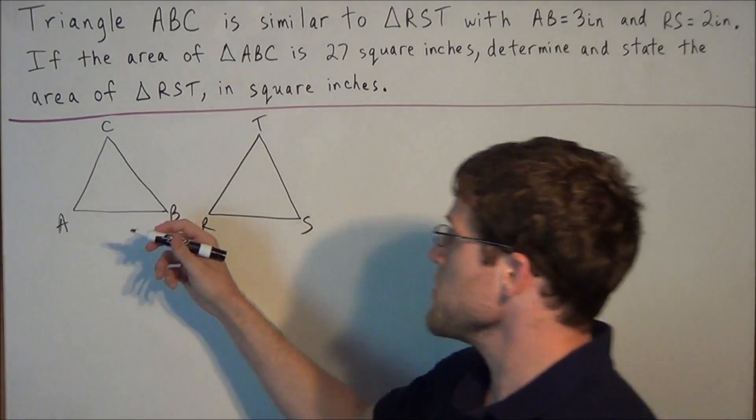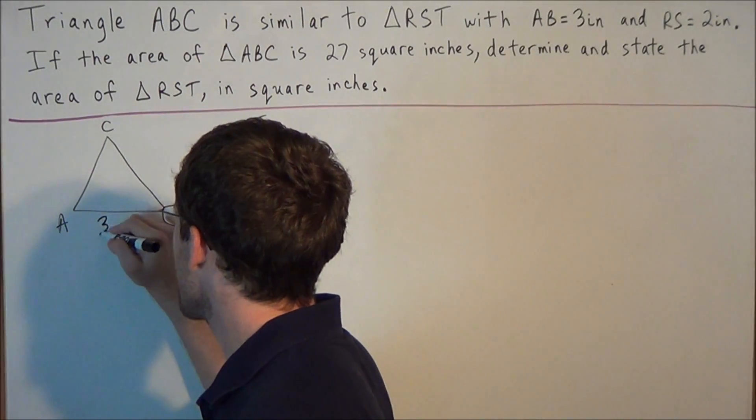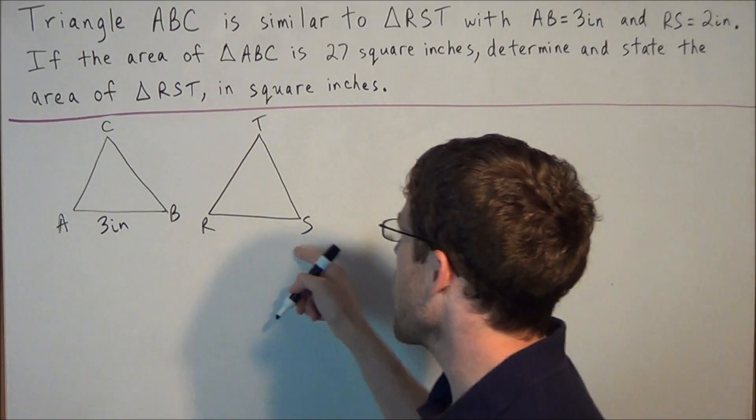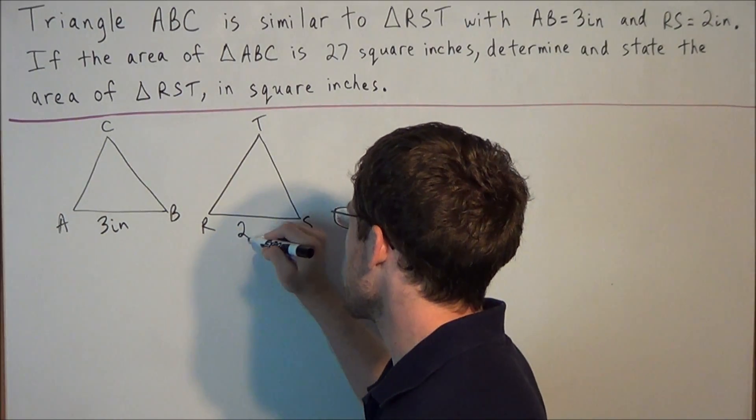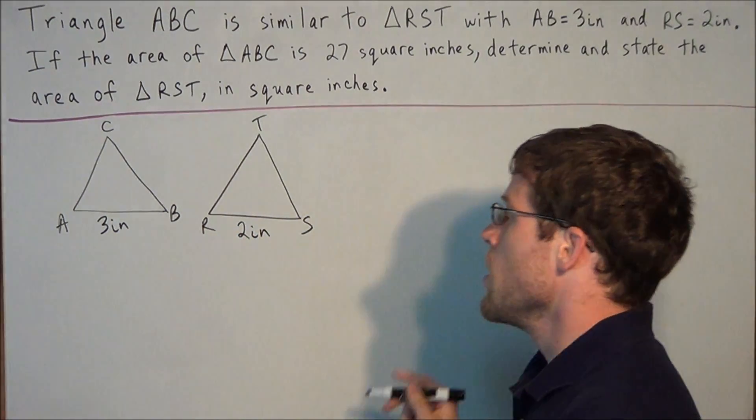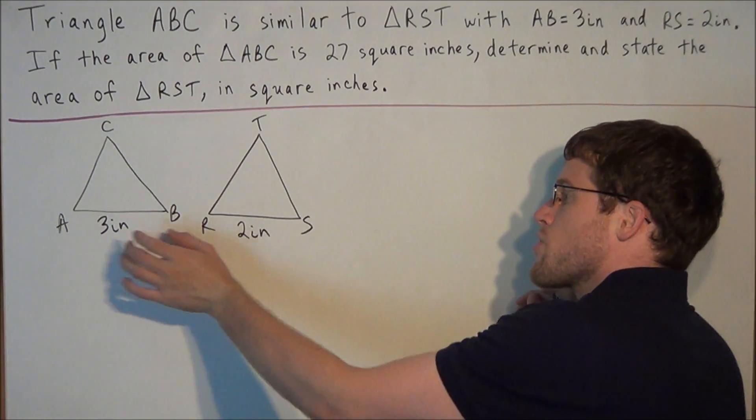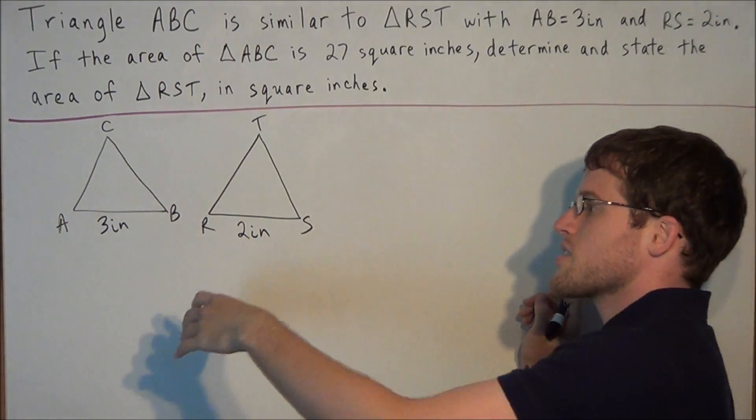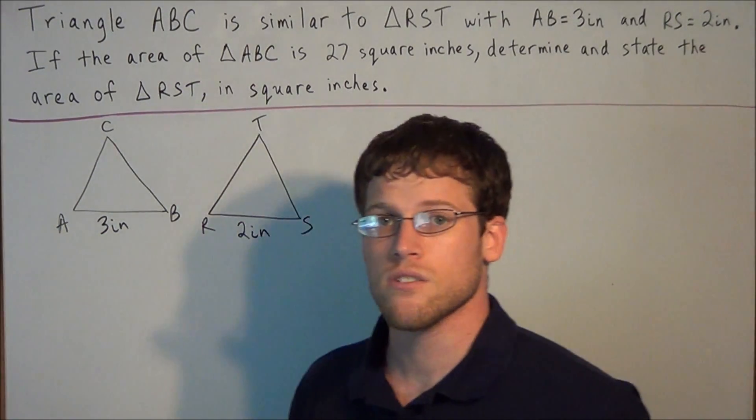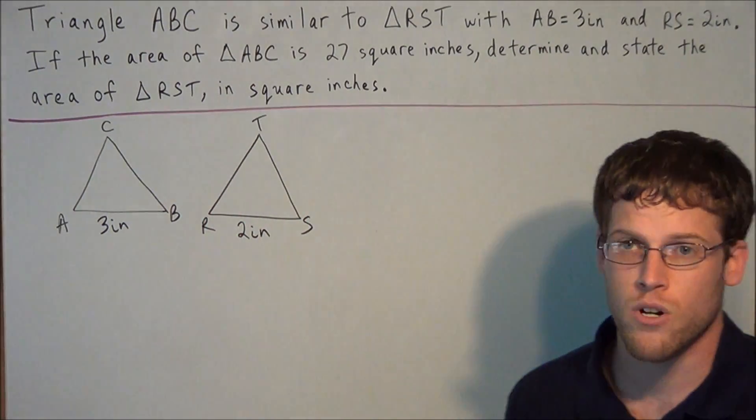So we're told that AB is equal to 3 inches and RS is equal to 2 inches. So the fact that these measurements showed up in corresponding locations at the base of each triangle is a good thing because we have something to work with now.